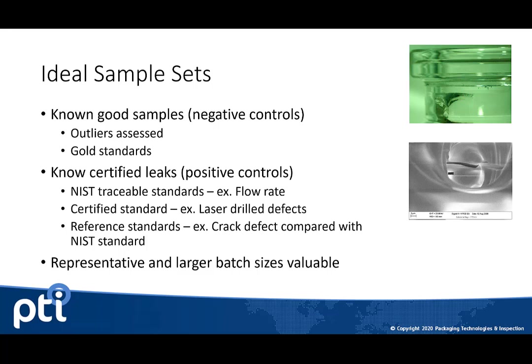You can also use gold standards or a master sample to add as a sort of reference value with negative controls. Regardless, you have that population of negative controls, and you can clean it of any outliers so that you know that sample set is representative of the population.